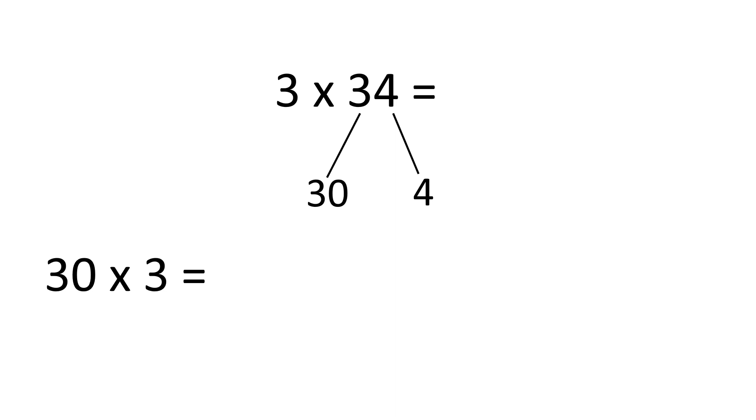30 times 3 is equal to 90. Because if I know 3 times 3 is 9, then I know that 30 times 3 is equal to 90. 4 times 3 is equal to 12.